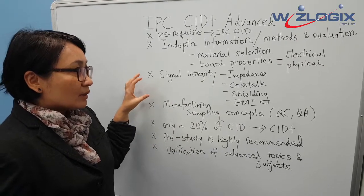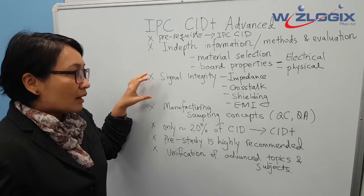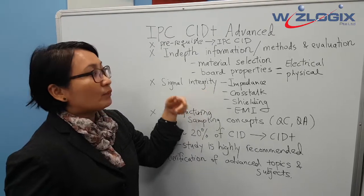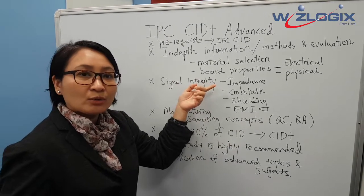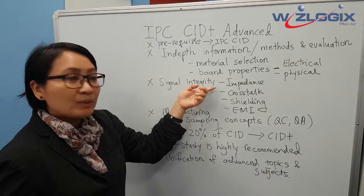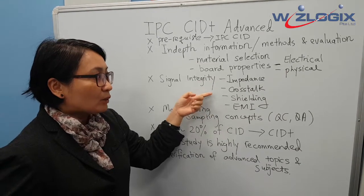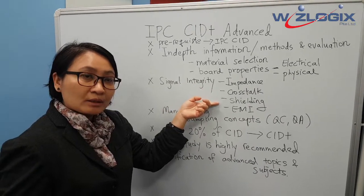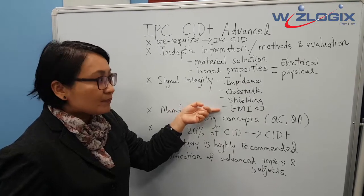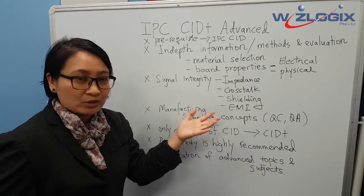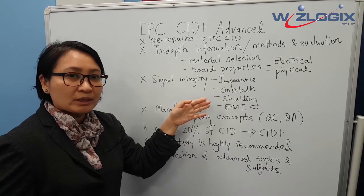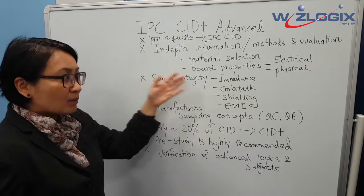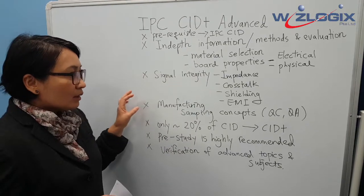Another key topic in CID Plus is signal integrity, where we teach participants impedance control calculations and show how impedance is derived in PCB board design. We also cover how to minimize crosstalk and achieve shielding for EMI and EMC using PCB physical structures — for example, using copper planes like VCC and ground, and understanding the stack-up.